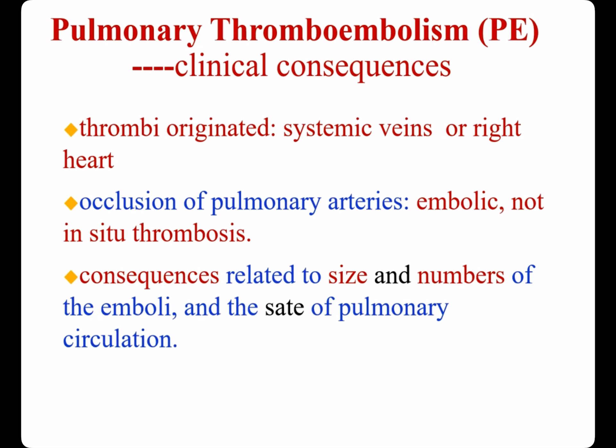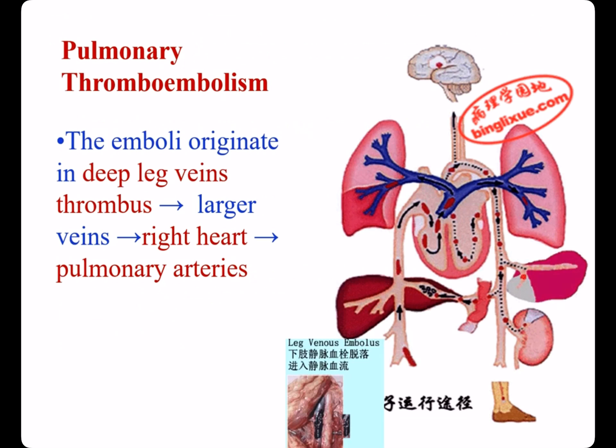The clinical consequences depend on the size and numbers of emboli and the state of pulmonary circulation. Emboli originating in deep leg veins are carried by blood backflow, passing through larger veins and the right heart, finally entering and lodging in pulmonary arteries.